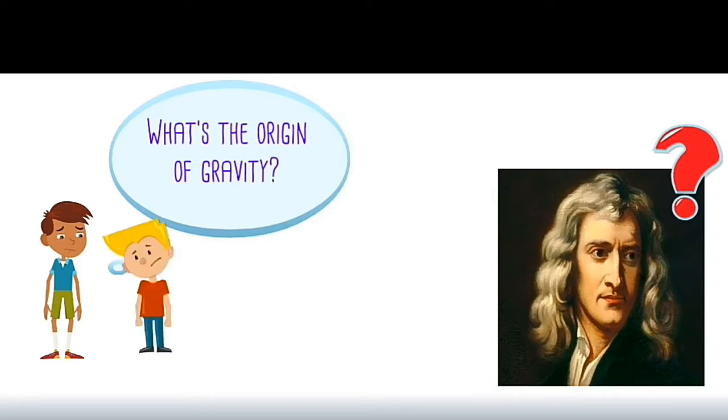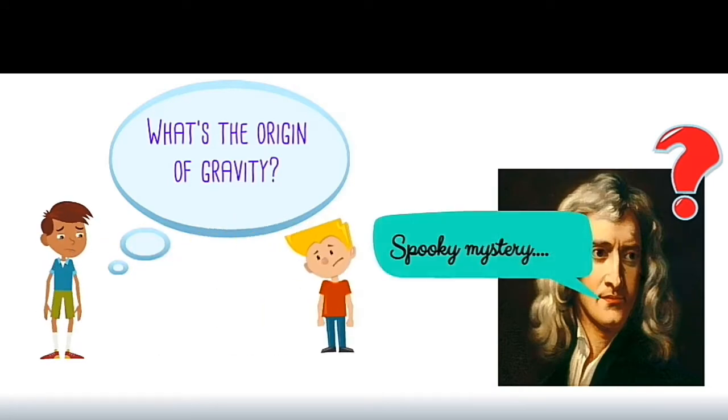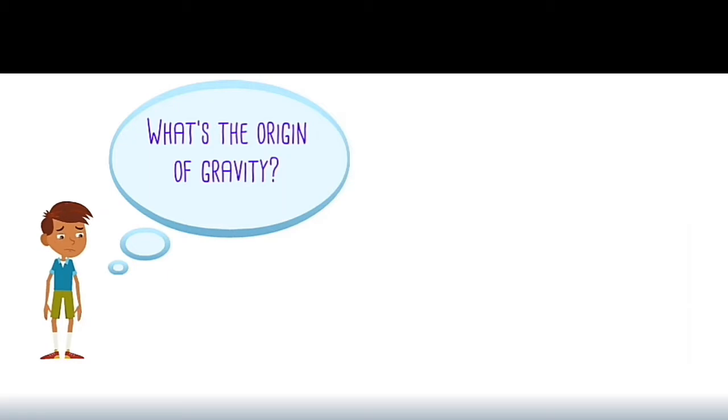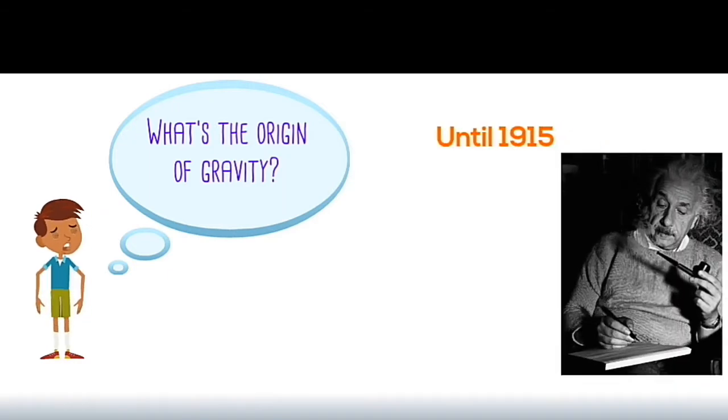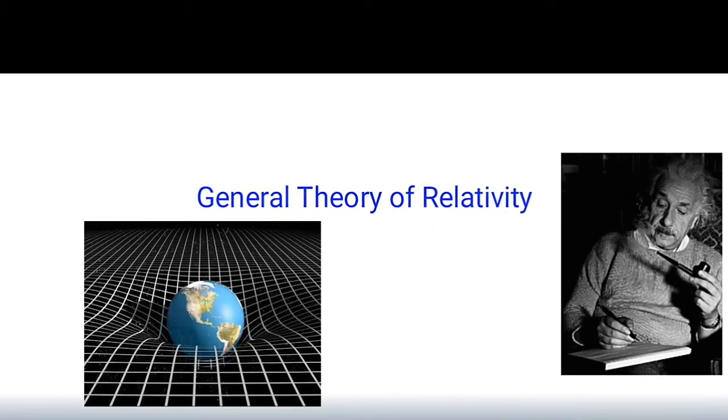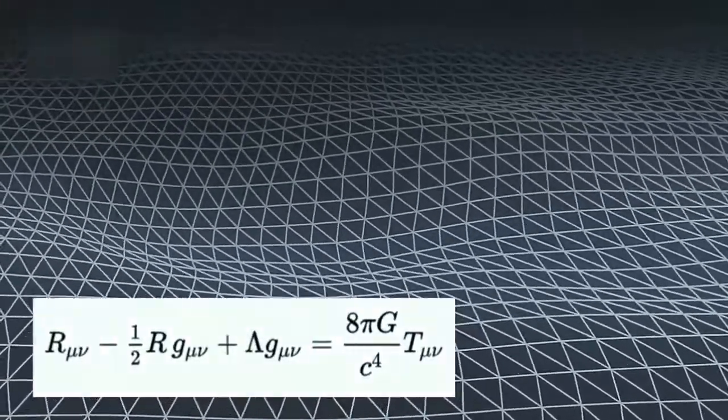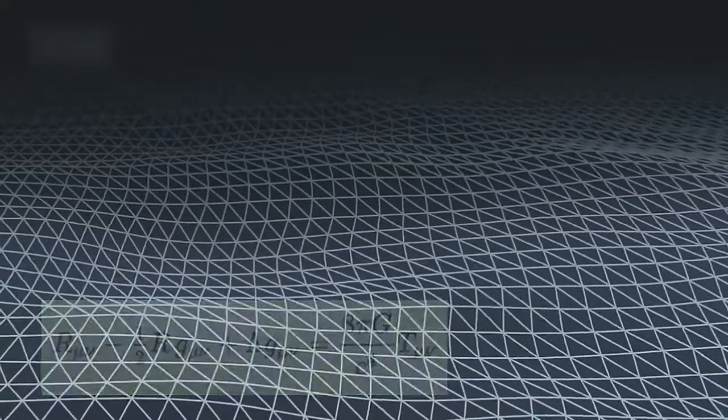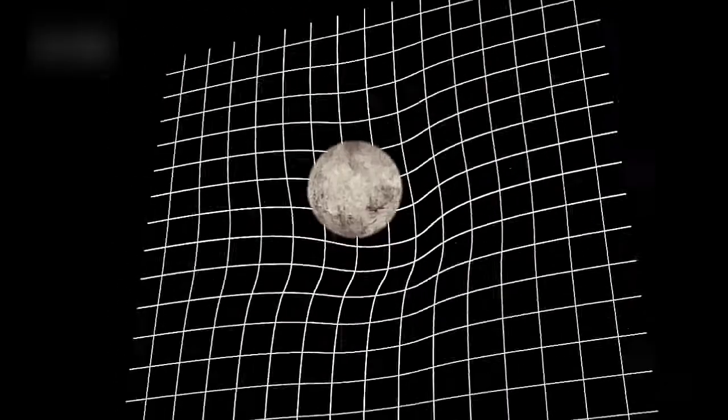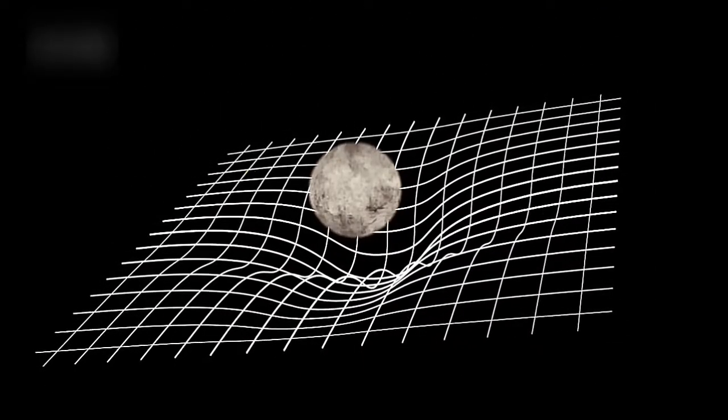But one thing that Newton couldn't explain: what is the origin of gravity? This question remained unexplained until 1915 when Einstein formulated his general theory of relativity. The general theory of relativity explains that matter can warp space-time fabric and curvature of space-time fabric causes gravity.